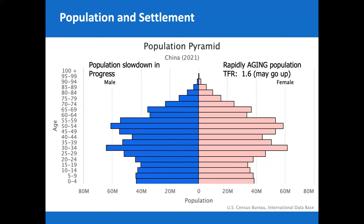Here is China in 2021 — rapidly aging. China has probably one of the most bizarre population pyramids of any country because they've had social programs to limit how many kids people could have. The one-child policy started, stopped, started, stopped — and you see this weird double hump. They may see a brief rise in fertility, but this is a population time bomb for their future.